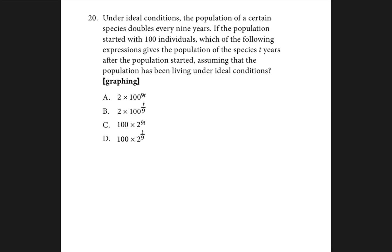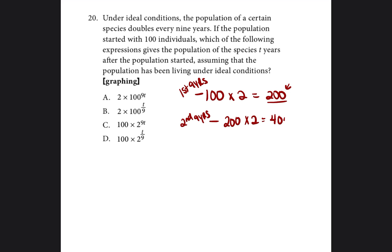That's a mouthful. Let's break it down. A population starts at 100 and doubles every 9 years. After the first 9 years it starts at 100 and doubles to 200. After the second 9-year period it starts at 200 and doubles to 400. So we have a base equation starting with 100 times 2, and we're going to keep building from there. We'll make an equation for time: t = 9p, where p is a positive whole number representing how many 9-year periods have passed.